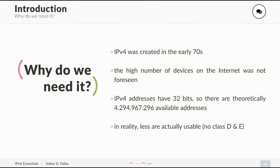But why do we need it? Well, IPv4, the previous generation, was created in the 70s and was never meant to handle such a high number of devices on the internet. As you probably heard, we don't have any IPv4 addresses left. They are just 32 bits, so theoretically we only have about 4 billion addresses. But in practice, some classes are not usable, which means we have even fewer addresses. We don't even have one IP address per person on earth — that's not enough, especially when you may have 10 devices at least.